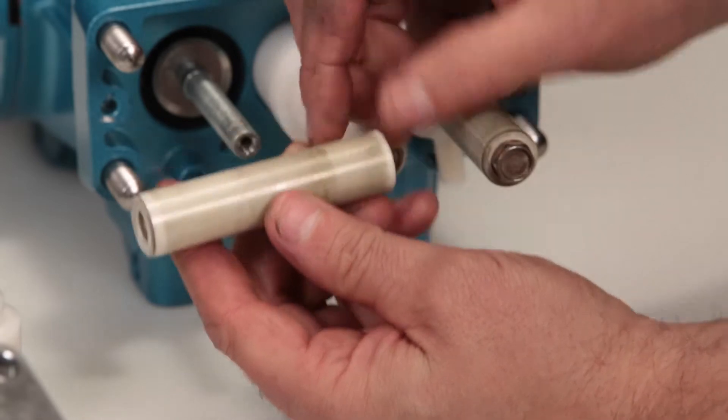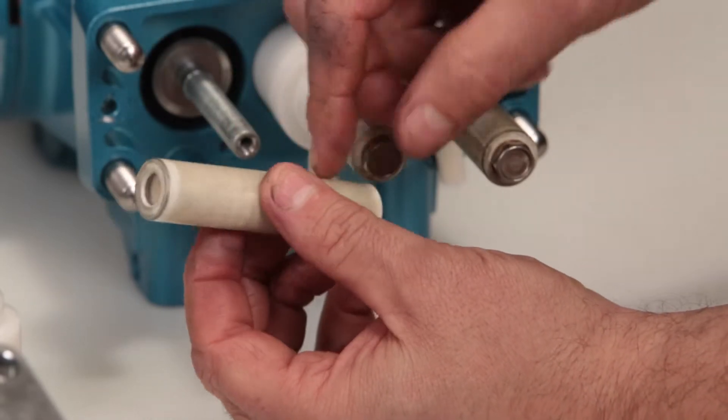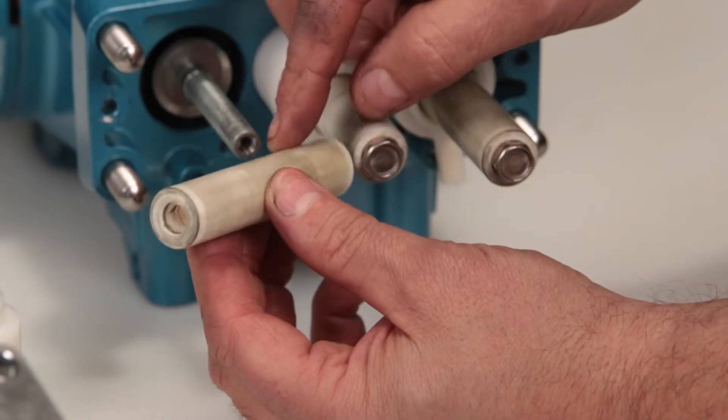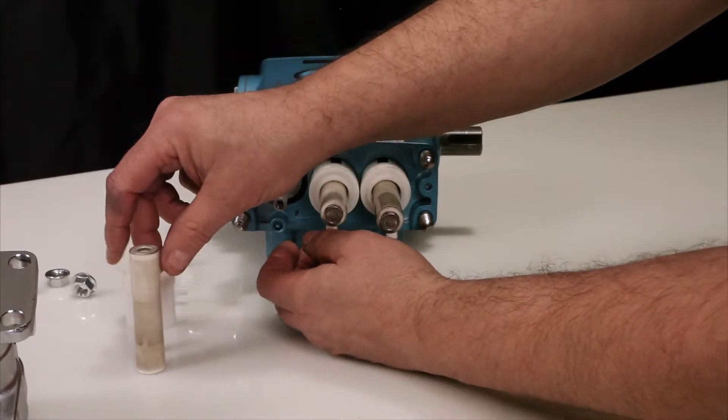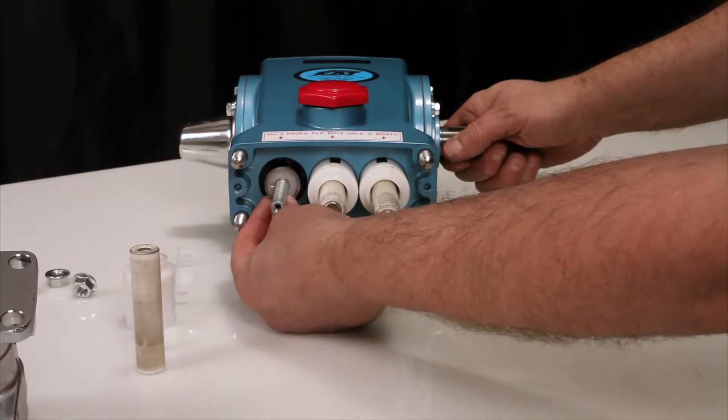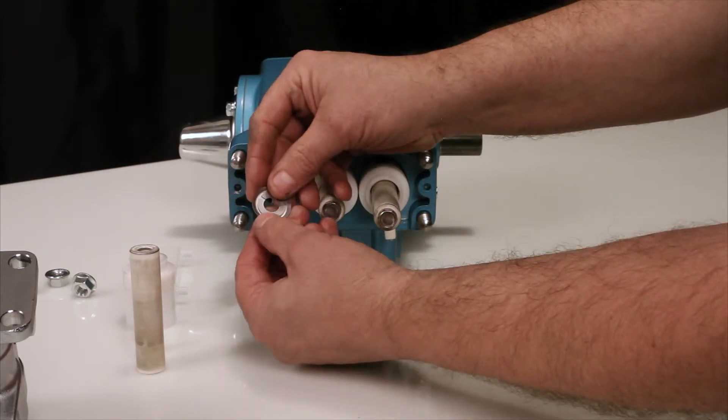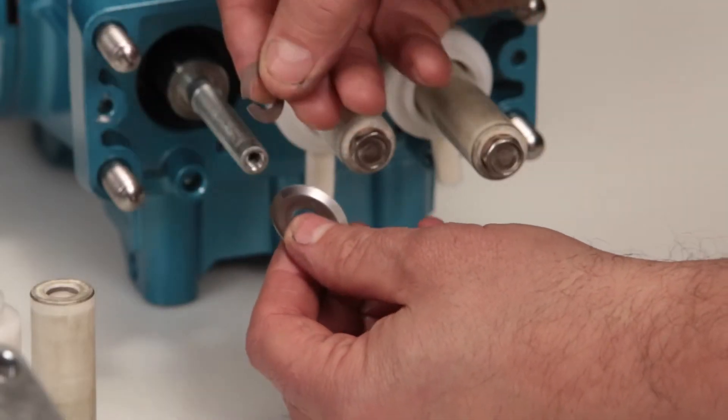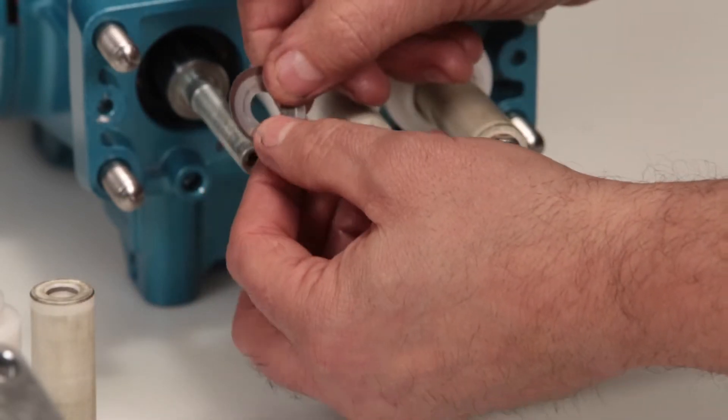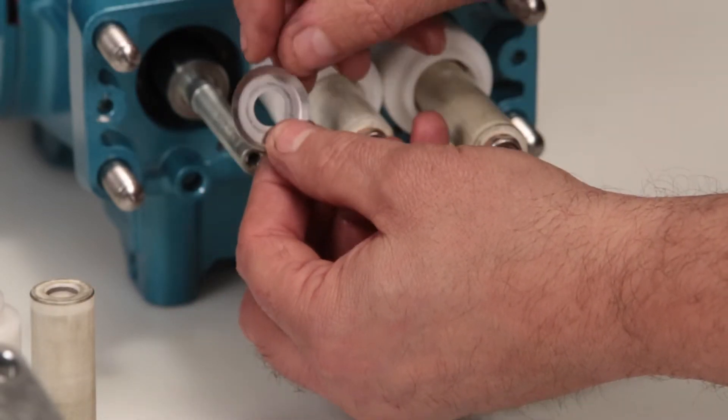Remove the ceramic plunger and inspect for cracks or scoring on the surface. Remove the keyhole washer and barrier slinger located behind the plunger. Both parts serve as a barrier to prevent water from entering the crankcase.